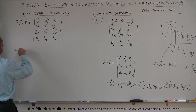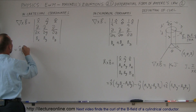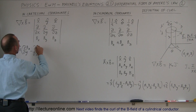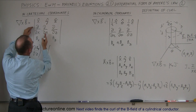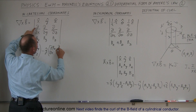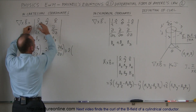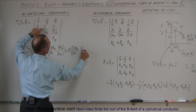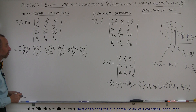Everything else looks exactly the same, so when you execute the curl of B in the Cartesian coordinate system, you end up with the x unit vector times (the partial derivative with respect to y of B sub-z minus the partial derivative with respect to z of B sub-y), minus the y unit vector times (the partial with respect to x of B sub-z minus the partial with respect to z of B sub-x), plus the z unit vector times (the partial with respect to x of B sub-y minus the partial with respect to y of B sub-x). That's how you take the curl of vector B in Cartesian coordinates — it looks just like taking the cross product of two vectors.